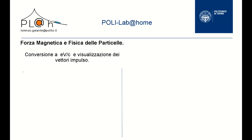In the previous video we computed the momentum of the pion. p was equal to 0.994 × 10⁻¹⁹ joules per meter per second. Now we have to convert this quantity into the units adopted in particle physics, that is to say in electron volts over c.